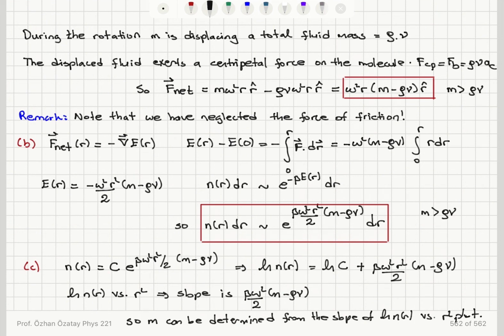Since there is no friction, all forces are conservative, and F_net = −∇E. Therefore E(R) − E(0) = −∫₀ᴿ F·dr, giving E(R) = −(omega²·R²/2)·(M − rho·V). This energy decreases as we go further from the center, as expected. The particle concentration at position R at equilibrium is given by the canonical distribution, proportional to e^(−beta·E(R)), and with two minus signs canceling, N(R)dR ∝ e^(beta·omega²·R²/2·(M − rho·V)) dR.